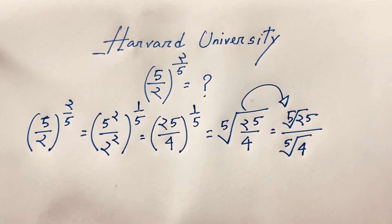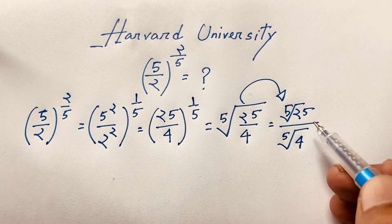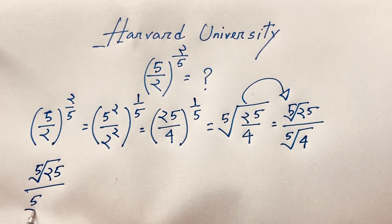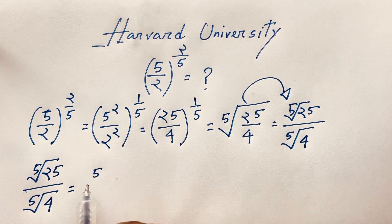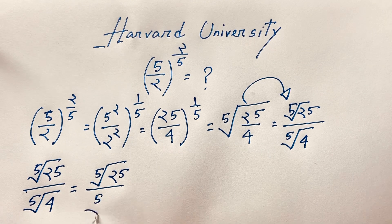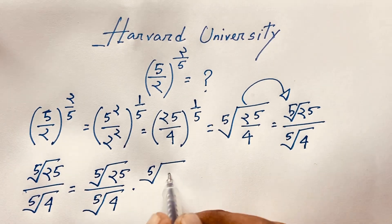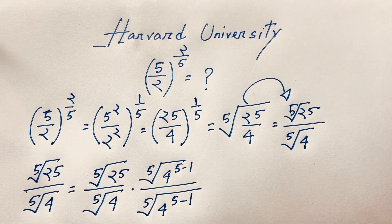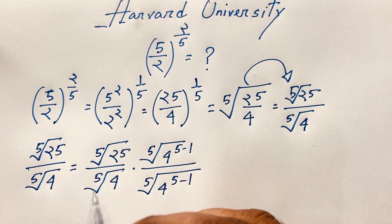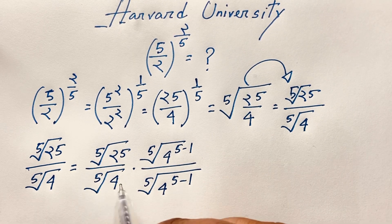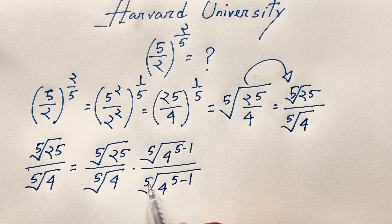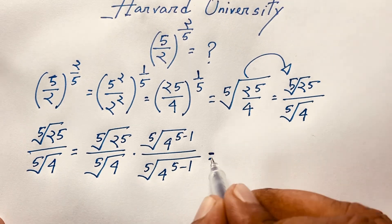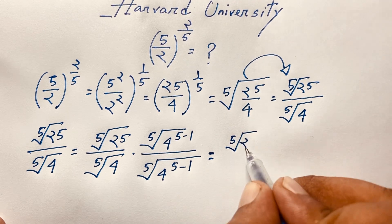To rationalize, we use the law: (n-th root of a) / (n-th root of b) equals (n-th root of a) × (n-th root of b)^(n−1) all over b. With b = 4, we multiply numerator and denominator accordingly. This gives us the 5th root of 25 times (5th root of 4)^(5−1) = (5th root of 4)^4, over 4.